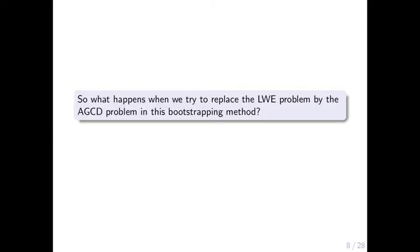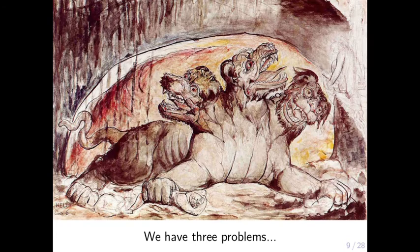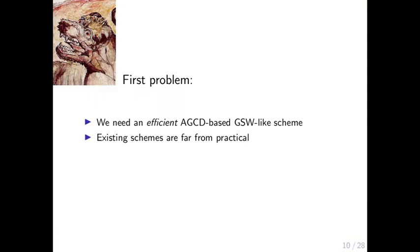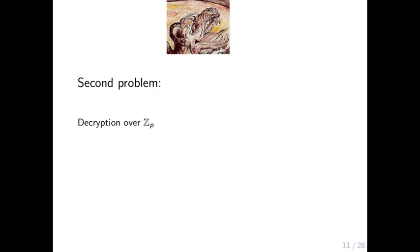What happens when we try to replace LWE by the AGCD problem in this bootstrapping framework? There are essentially three problems. The first problem is that we need a GSW scheme based on the AGCD problem, but existing schemes are not practical, especially when we try to use them to encrypt polynomials. The second problem is inherent to FHE over the integers.